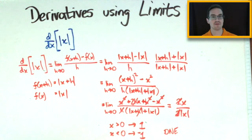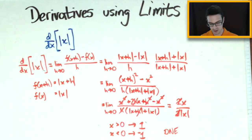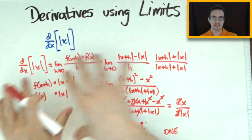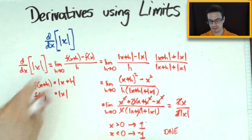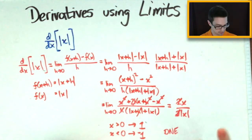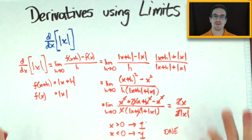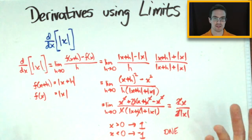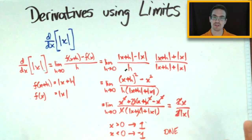So that's the absolute value derivative. We used the limit process to find the derivative of the absolute value of x, and as you can see both one-sided derivatives do not match, so there is no derivative — it's non-differentiable. If you have any questions about this, let me know.